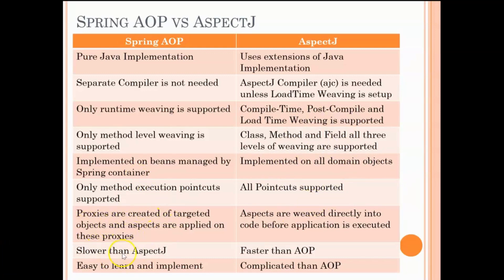Another drawback of Spring AOP is that for its implementation you need proxies created — either Java-based proxies or other proxies. Basically, you need a proxy for the targeted object and the aspect is applied on the proxy. If you remember the first program we had seen on Spring AOP using the traditional approach, there we were talking about proxies and we had implemented it using a proxy. If you have not seen that video, you can check out my video on the traditional implementation of Spring AOP — I will share the link.